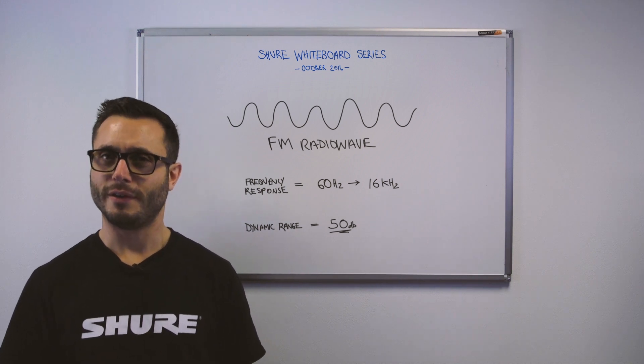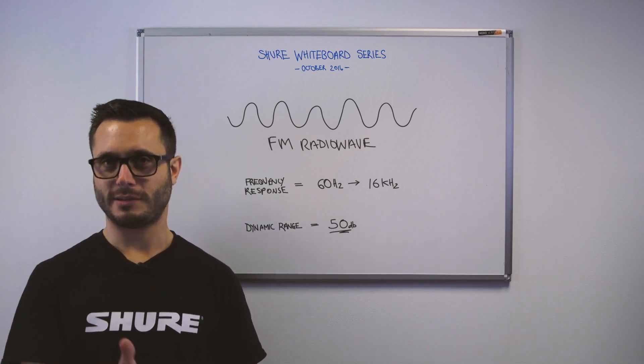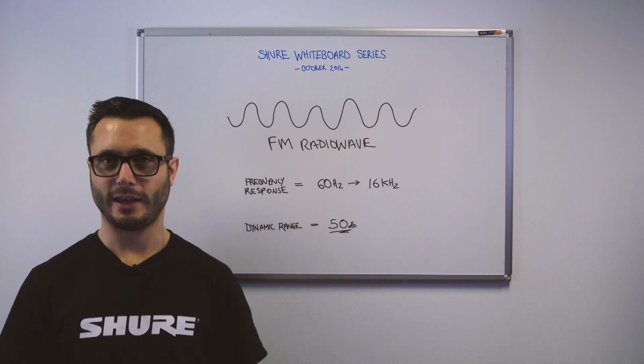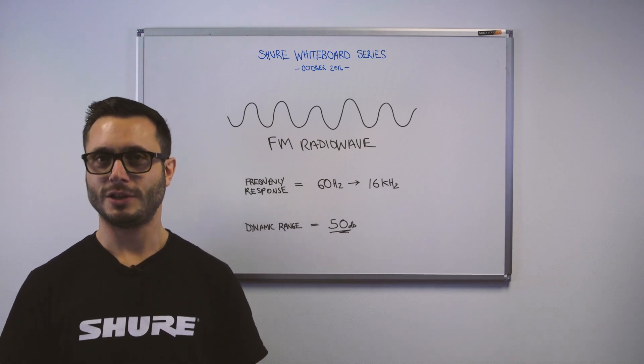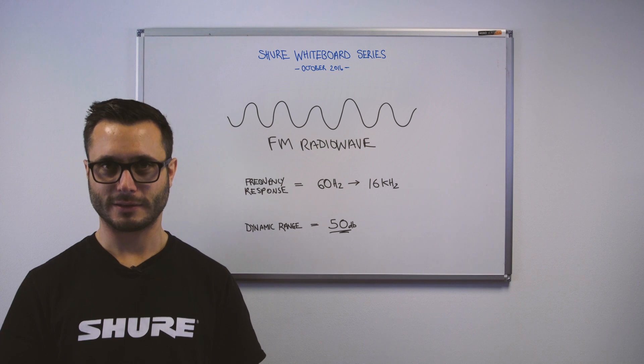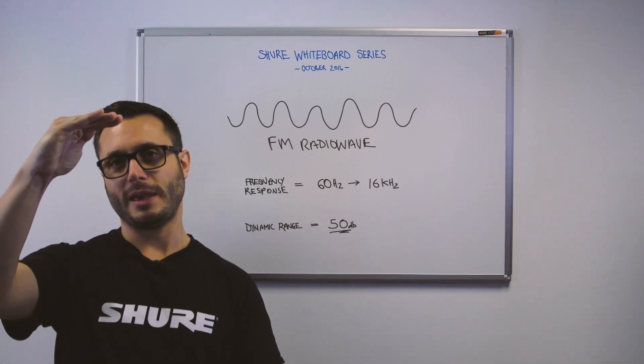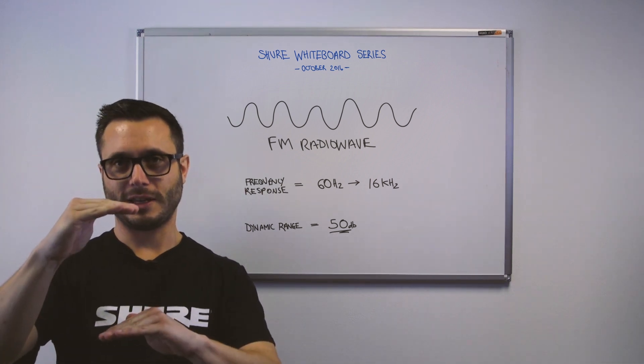Notably dynamic range and also frequency response. The frequency response of an FM radio wave is about 60 Hz to 16 kHz, and the dynamic range is about 50 dB.